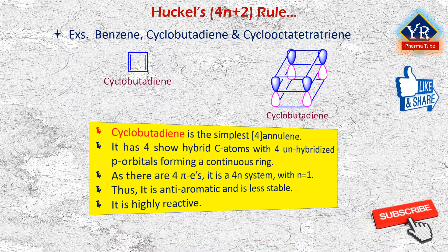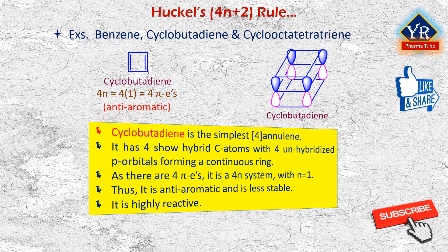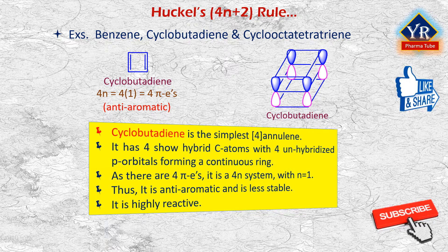Cyclobutadiene: the simplest annulene is 4-annulene or cyclobutadiene. Cyclobutadiene has 4 sp2 hybrid carbon atoms with 4 unsubstituted p orbitals forming a continuous ring. As there are 4 pi electrons, that is 2 pi bonds in the classical structure, so it is a 4n system with n=1. Thus, cyclobutadiene is anti-aromatic and its conjugation should make it less stable. The pi electrons are localized in 2 double bonds rather than delocalized around the ring, as indicated by an electrostatic potential map. It is highly reactive and shows none of the properties associated with aromaticity.